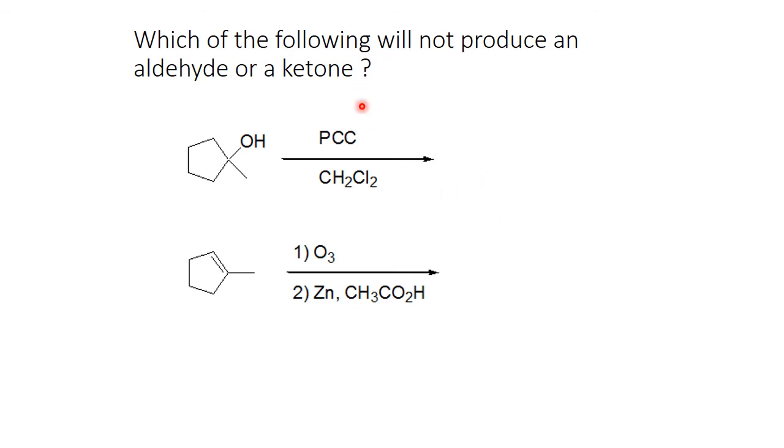Which of the following will not produce an aldehyde or ketone? Well, if I look at the first one, I can see that this is a tertiary alcohol. These are not oxidized, so there would be no reaction to this compound. This one will give us a ketone and an aldehyde both. There would be an aldehyde on this carbon and a ketone on this carbon. So the resulting product would be 1, 2, 3, 4, 5-oxo-heptanol. So this one will not produce an aldehyde or ketone.